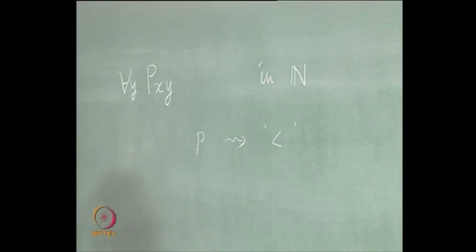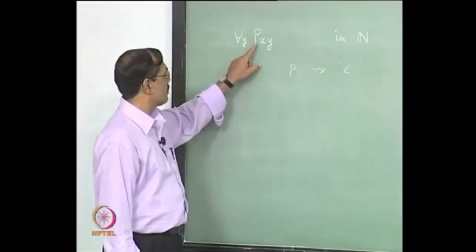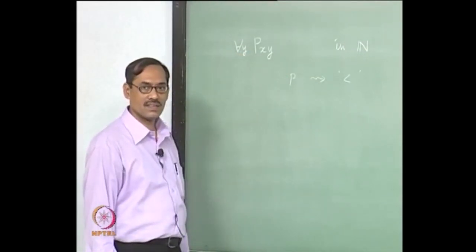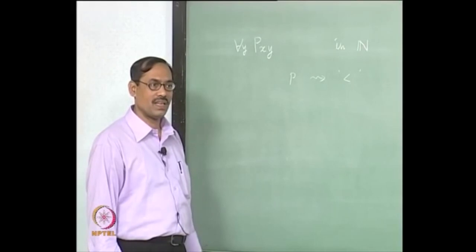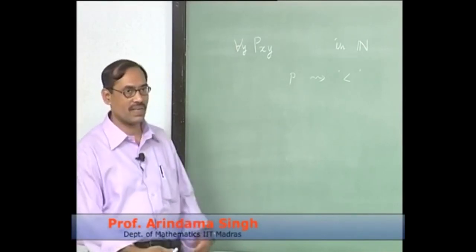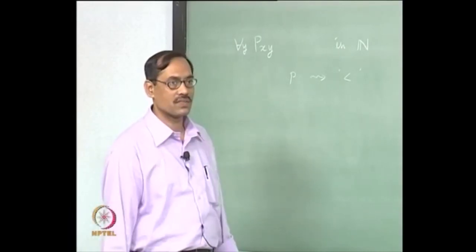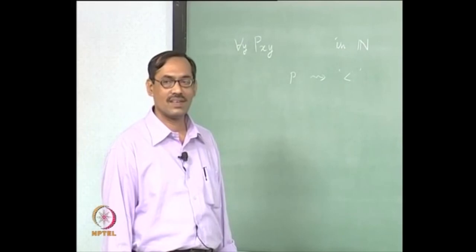The relation 'less than' has meaning in the set of natural numbers. We will formalize all these things, but now let us look at it informally. If you translate this sentence, it will look like: for each y, x is less than y. That y will be varying over natural numbers. For every natural number, the sentence will read: for every natural number, x is less than y. But what about x? Because this is not a sentence, we are not able to say whether this sentence is true or false in natural numbers.